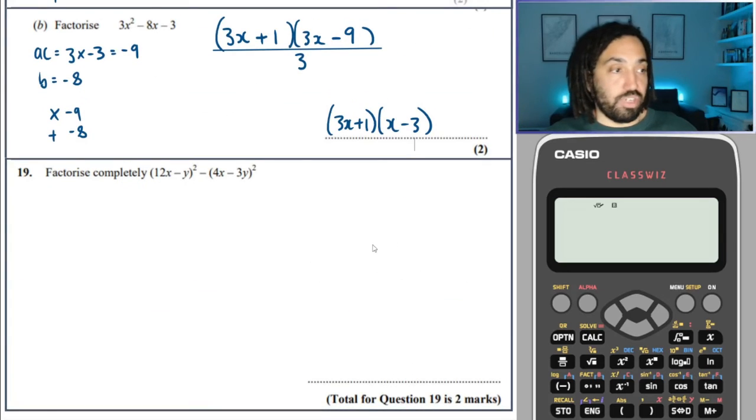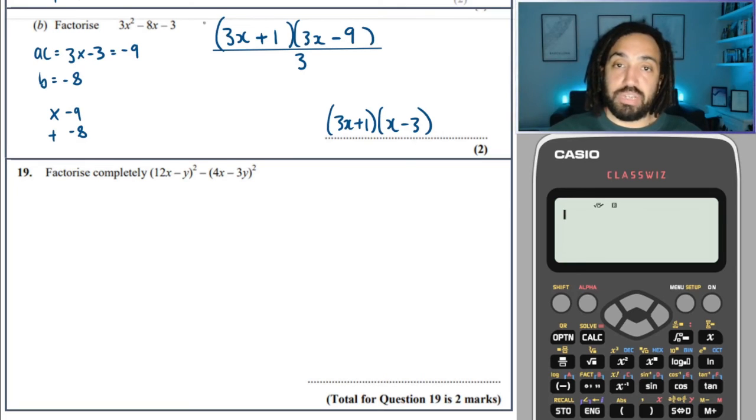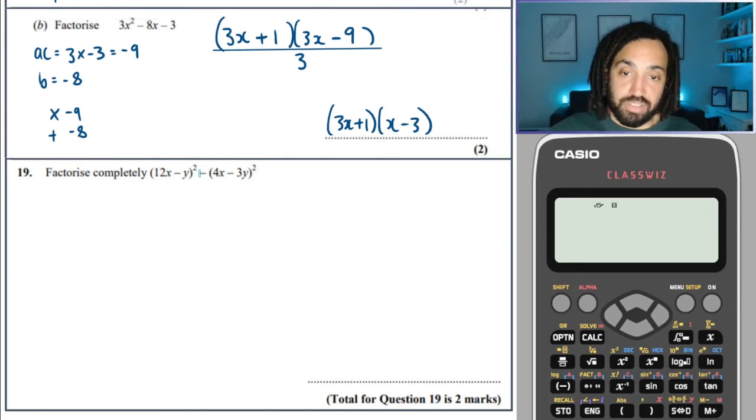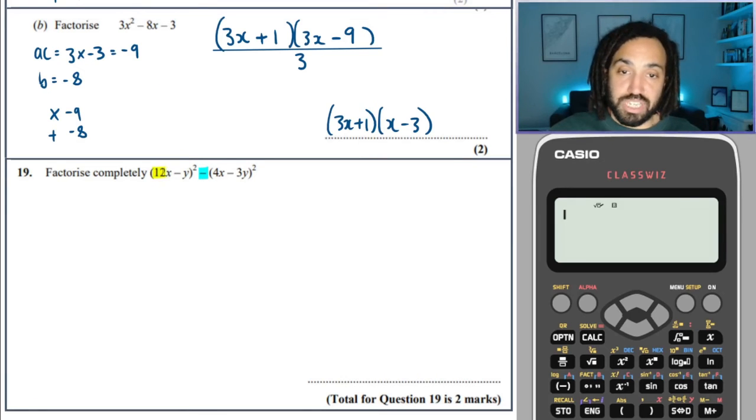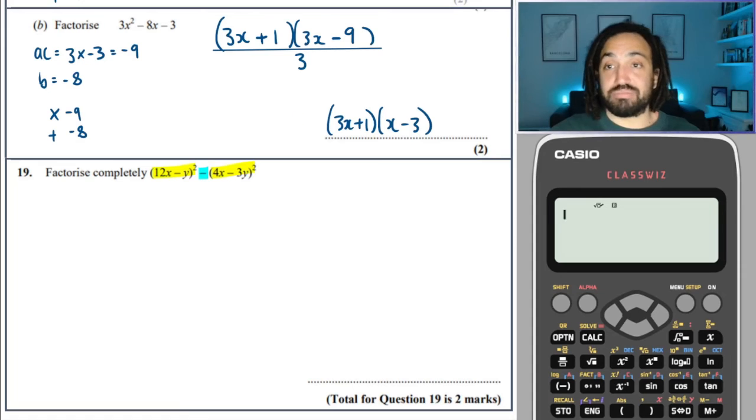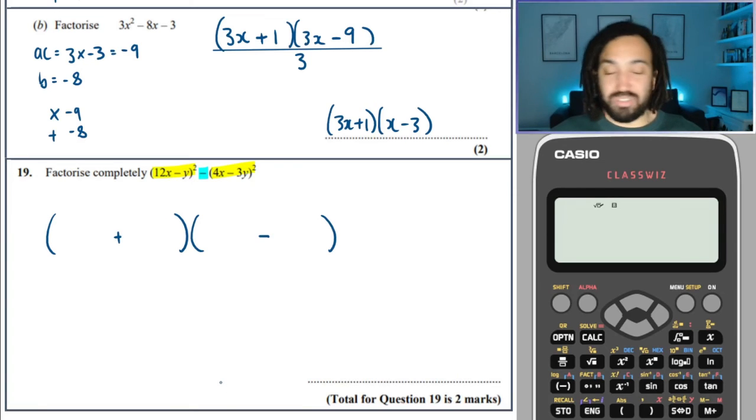Woof. Final question. Super tricky. But if you were paying attention earlier, we have a difference. And these are most definitely squares. Because they are literally squared brackets. So when we have this, we open up a double bracket. We put plus in the middle of one and a minus in the middle of the other. Doesn't matter which way round. I think previously I did the minus first, but literally doesn't matter.